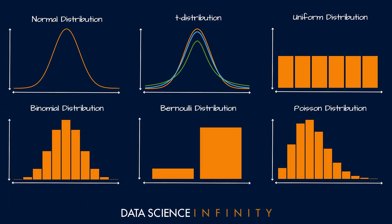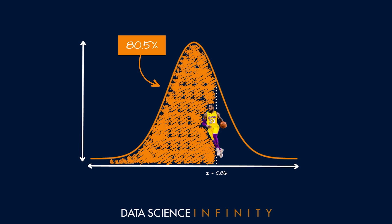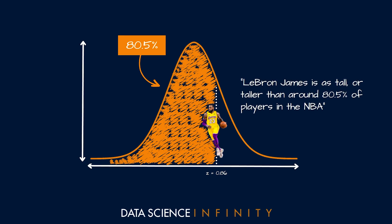To find the answers to these questions, let's take a step back. Distributions of data come in many shapes and forms. And if our data fits a normal distribution, we can do some magical things — like calculating that LeBron James was 0.86 standard deviations above the mean height of players in the NBA, and figuring out that 80.5 percent of players are as tall or shorter than him.